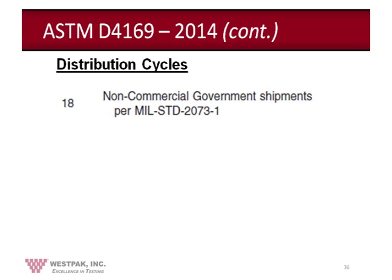Many portions of the government in the 1980s, except for the military, tried hard to get out of the standards-writing business, as that wasn't their core expertise. So they tried incorporating government testing standards into ASTM D4169, and that's what distribution cycle 18 was all about — an attempt to consolidate many different government test standards of a non-military nature. That's why it has some elements somewhat different from distribution cycles 1 through 17.